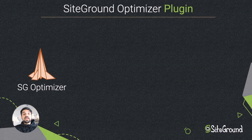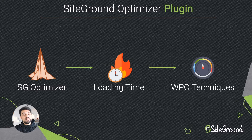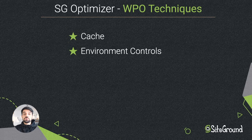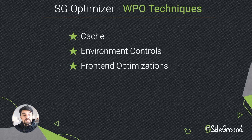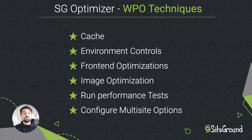SiteGround Optimizer is a WordPress plugin developed by SiteGround to improve the performance of WordPress instances hosted on our hosting platform using multiple optimization techniques. Among all those techniques, you'll be able to configure and manage settings in the cache, environment controls such as HTTPS, PHP versions and so on, front-end optimizations like CSS or JS minification, disable emojis and other stuff as well, image optimizations, run performance tests and last but not least, configure multi-site options.